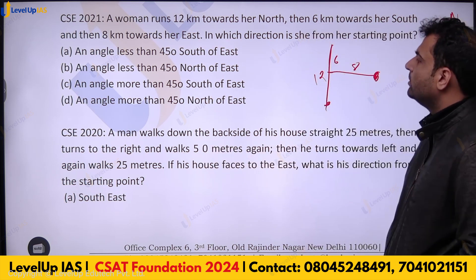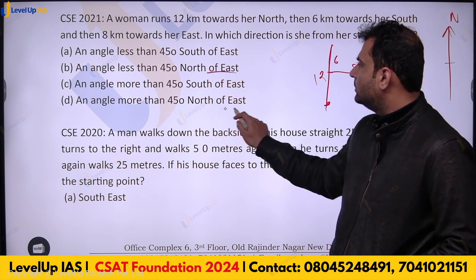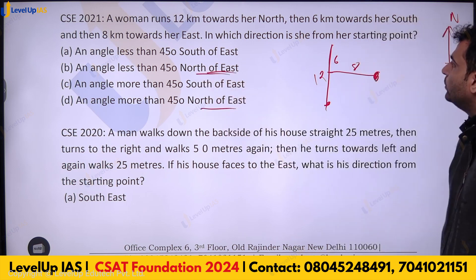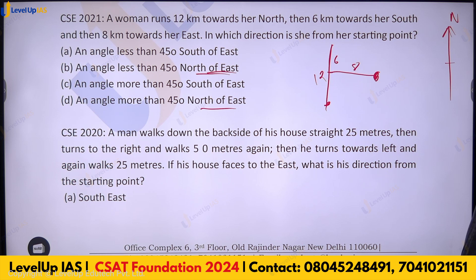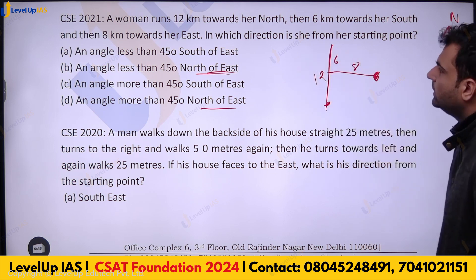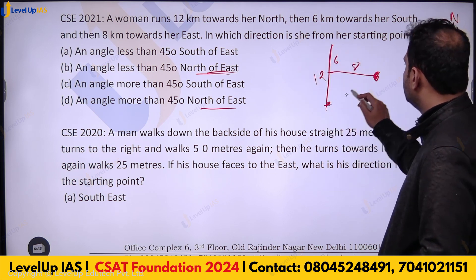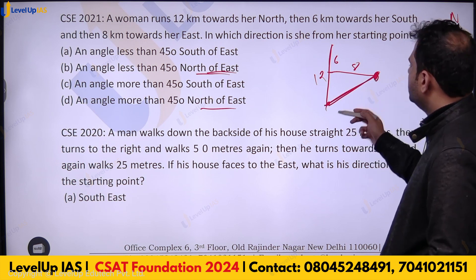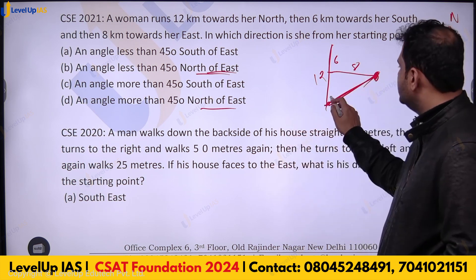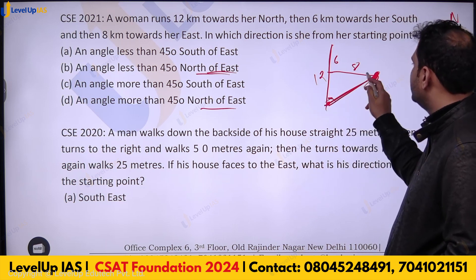Now we have to comment on the angle. She is north of east — that is fine. But is the angle more than 45 degrees or less than 45 degrees? If you draw a neat enough diagram, you can see that this angle is more than 45 degrees because the north component is bigger than the east component.